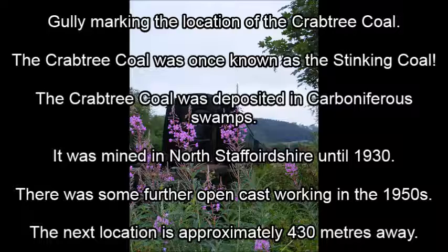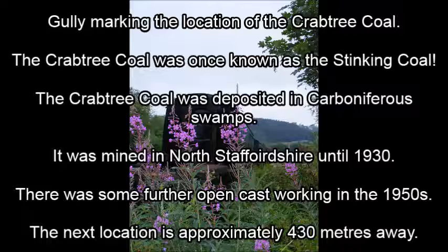A fault is defined as any linear plane with a displacement along it. A fracture can only be called a fault when movement or deformation has been recorded. In the Chernit Valley, the faults formed in association with the Variscan and Alpine orogenies. The Variscan orogeny was a major mountain building event that resulted in the formation of Pangaea. The Alpine orogeny was responsible for the formation of the Alps. These events were recorded in the Chernit Valley by the Tilted Rocks and North-South and East-West Trending Fault.